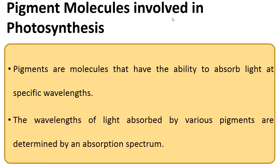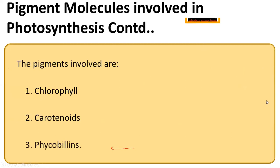Now, regarding the pigments involved in the energy-trapping process: every pigment has the ability to absorb light, but not the complete spectrum. Each pigment has its own specific wavelength range in which it absorbs light. This absorption is called the absorption spectrum. The pigments involved in photosynthesis include chlorophyll molecules, carotenoids, and phycobilins, classified based on the wavelength they absorb.